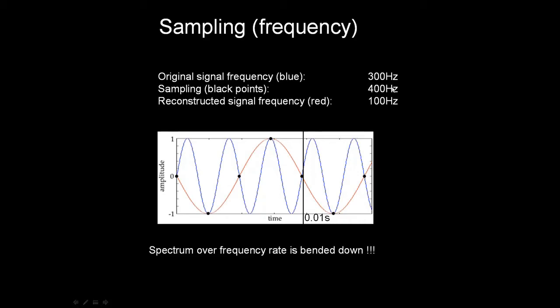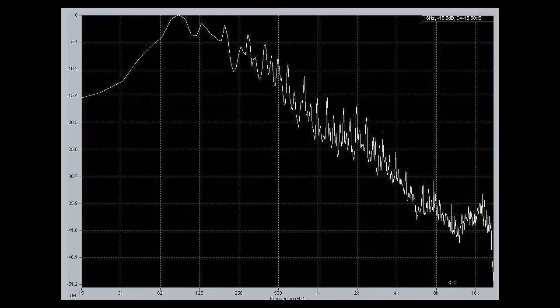We can see in this example that the digital signal has one cycle in the same time. If we convert later from digital to analog, we will have a 100 Hz frequency signal. The spectrum is bent down from high frequency to low frequency.